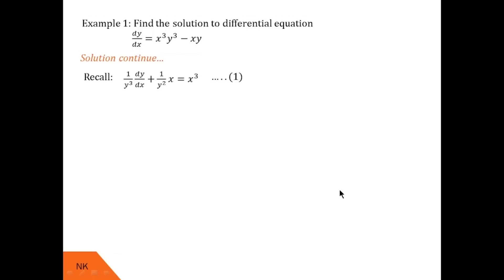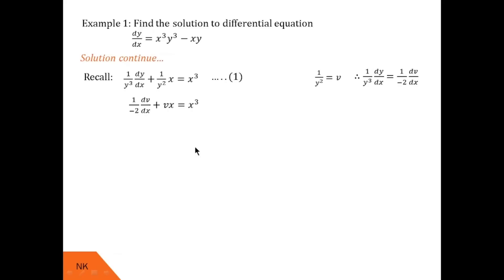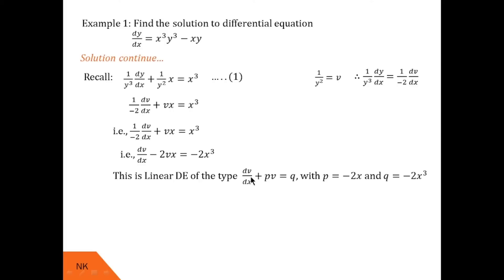After substitution, the equation becomes −(1/2)·dv/dx + vx = x³. Multiplying throughout by −2 gives: dv/dx − 2vx = −2x³. This is now a linear differential equation in v of the form dv/dx + Pv = Q, with P = −2x and Q = −2x³.